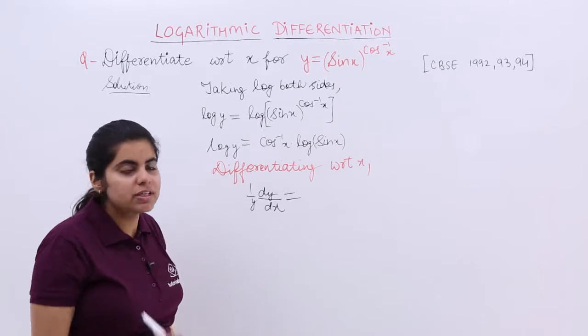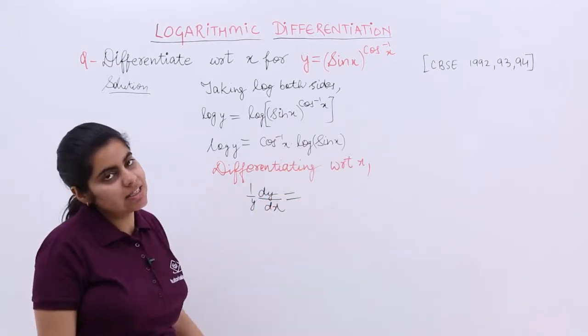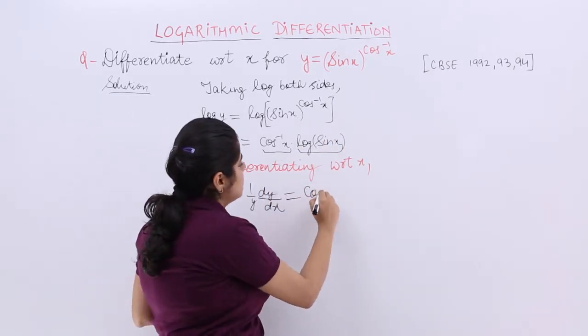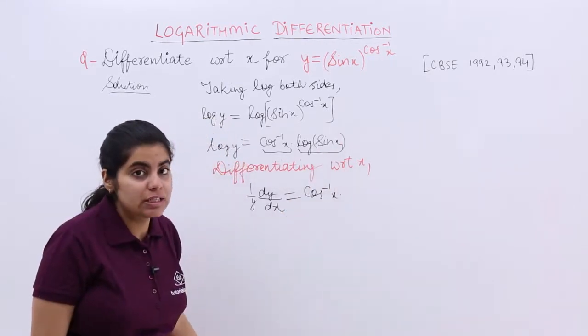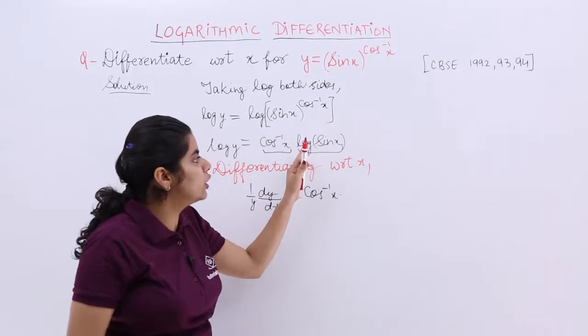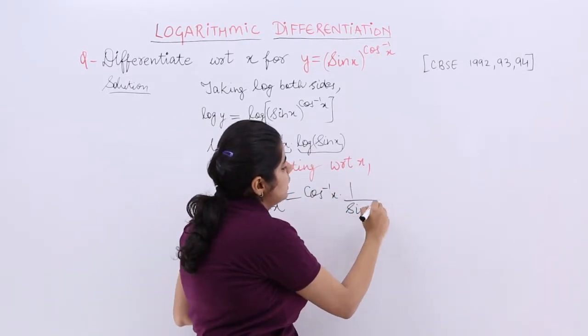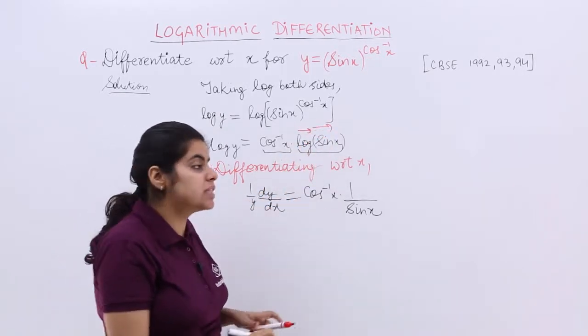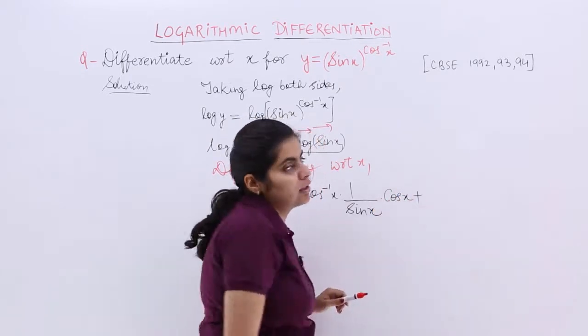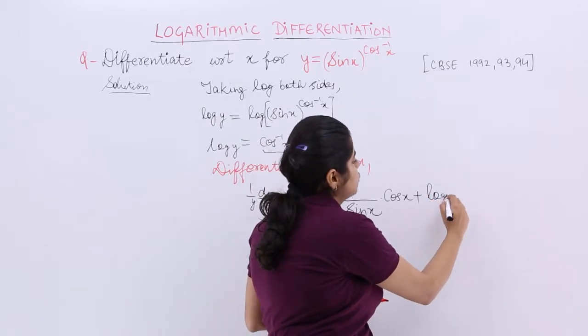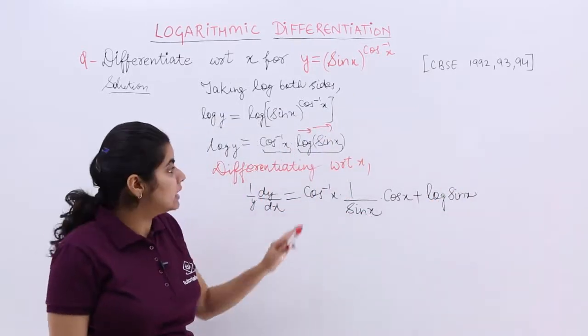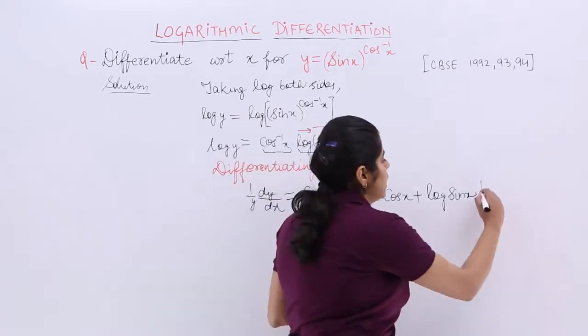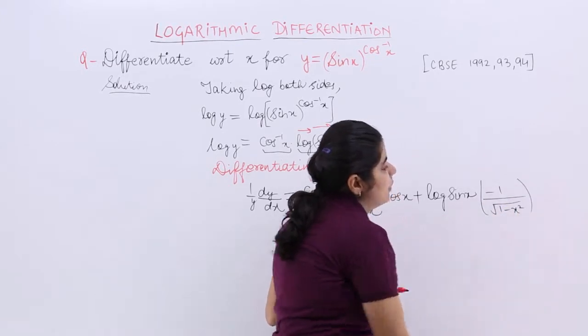Now we have cos inverse x the first function, log sin x the second function. So it is nothing but the product of two functions. Apply the product rule, leave the first as it is, take the differentiation of the second. So differentiation of this is what? Log of something is 1 upon that, 1 upon sin x and because it is a chain rule, log is there, then sin x is there. So differentiation of sin x is cos x plus log sin x is there as the second function.